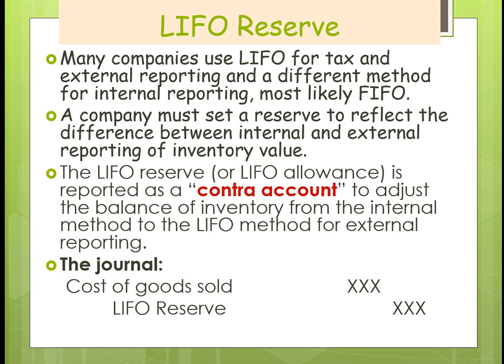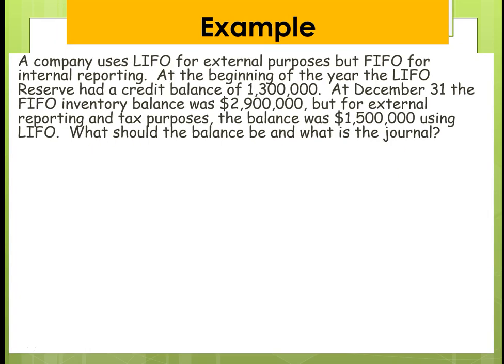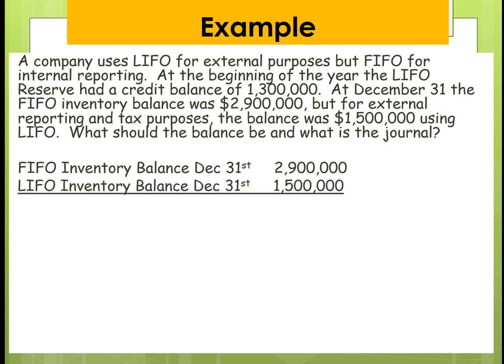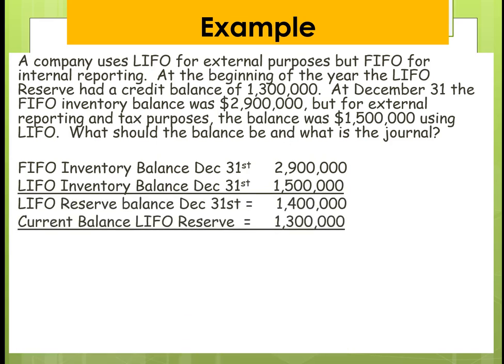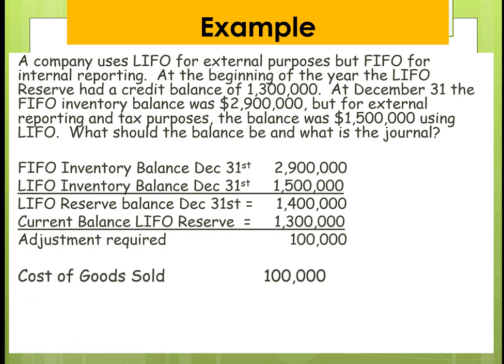Now we're going to look at an example. A company uses LIFO for external reporting but FIFO for internal. At the beginning of the year, the LIFO Reserve had a credit balance of $1.3 million. At the end of the year, the FIFO inventory balance was $2.9 million, but for external reporting purposes the balance was $1.5 million using LIFO. The difference is $1.4 million. The current reserve has $1.3 million, so we need to increase it by $100,000. The journal entry is: debit Cost of Goods Sold $100,000, credit LIFO Reserve $100,000, bringing the reserve to $1.4 million.